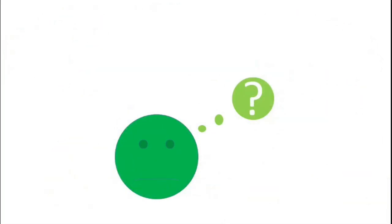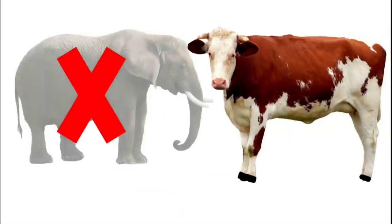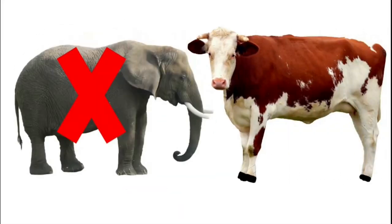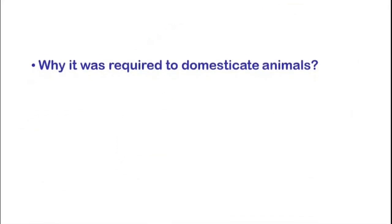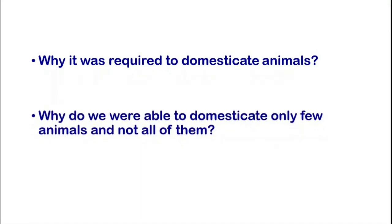Welcome to Animal Sciences Channel. Have you ever wondered why we domesticated cattle instead of elephants, and horses instead of zebras? This video will provide some reasons for why it was required to domesticate animals, and why we were able to domesticate only a few animals and not all of them.